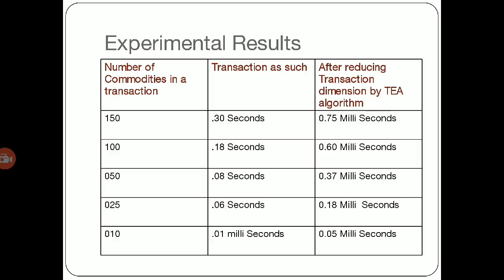Experimental results. The algorithm has been performed on some real-time larger datasets in which there are a number of commodities and transactions were large in number—such as 150, 100, 50, 25, 10, etc. When we perform this processing with the traditional way of transactions, we found our results within 30 seconds.